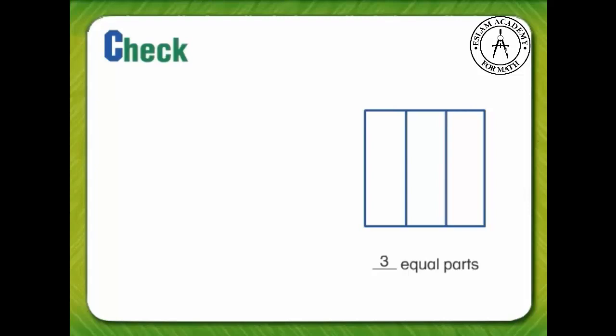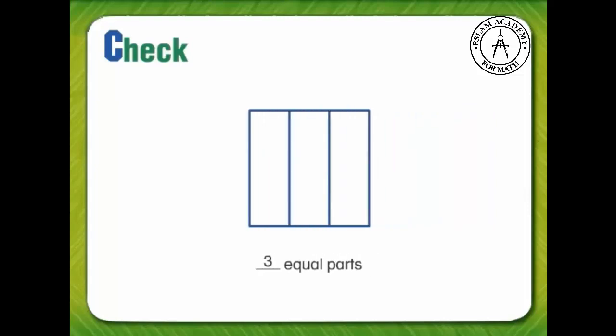To check our answer, we need to look back at the problem and ask: is our answer reasonable? The picture we drew shows that Joe, her sister, and her brother each will get an equal part of the sandwich. So our answer is reasonable.